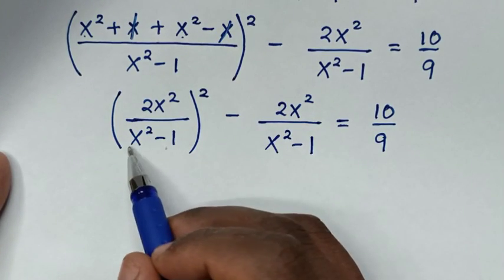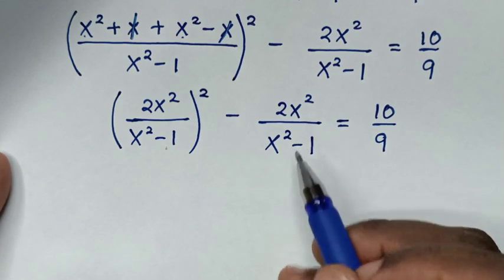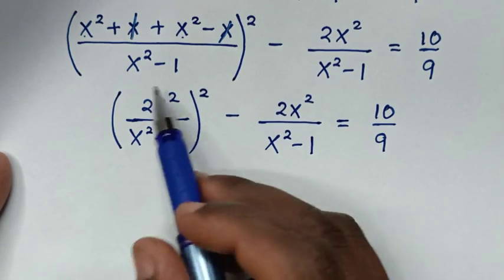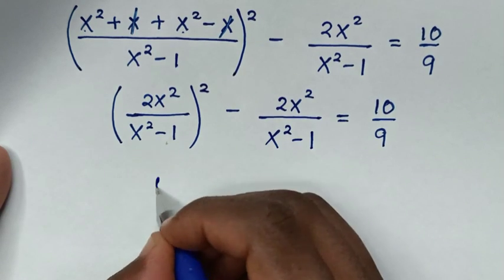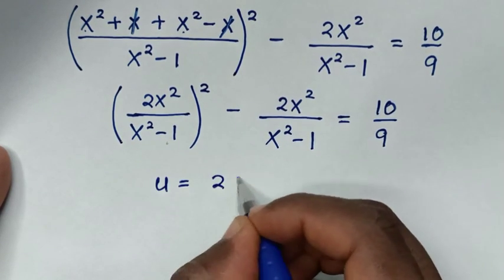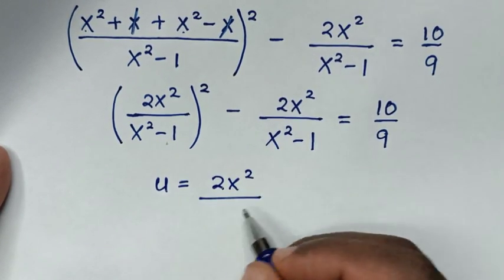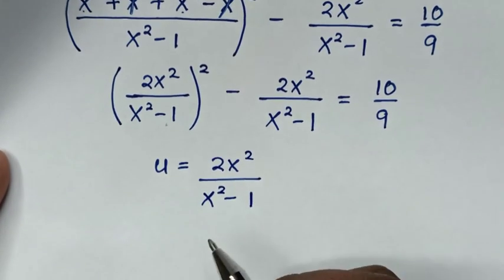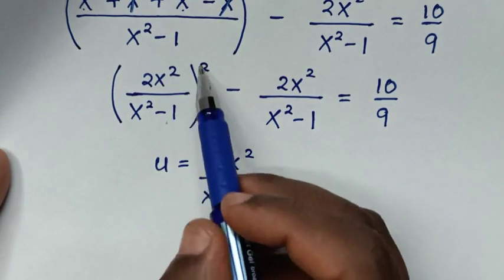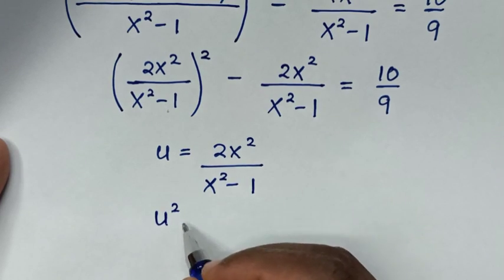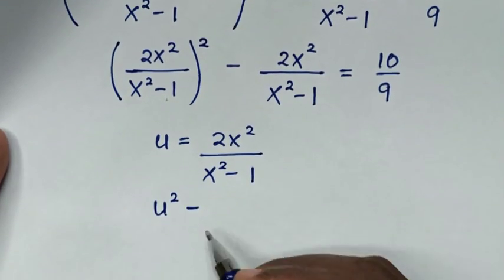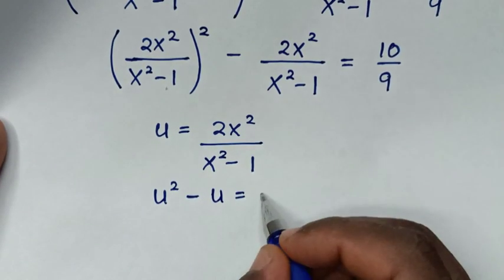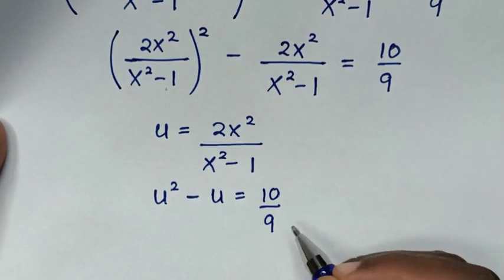We notice 2x squared over (x squared minus 1) appears twice, so they are common. We let u equal to 2x squared over (x squared minus 1). Substituting gives u squared minus u equals 10 over 9.